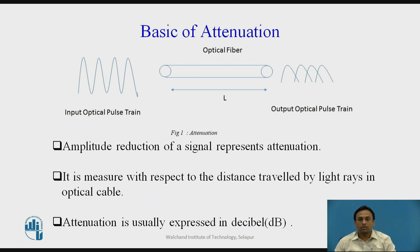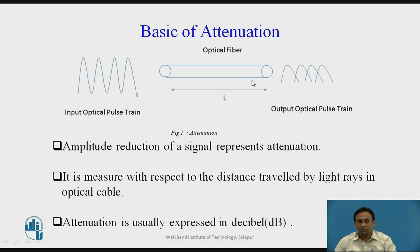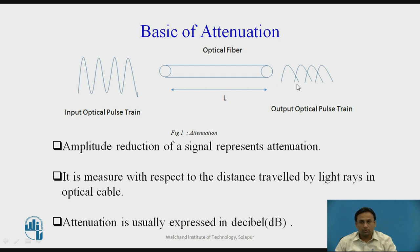We'll understand the basics of attenuation. As shown in the figure, this is the input optical pulse train being transmitted through an optical fiber of length L, and this is the output optical pulse train obtained at the end of the fiber. There is a reduction in amplitude and overlapping of the signal — such effects are known as attenuation.